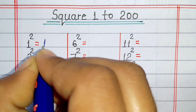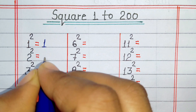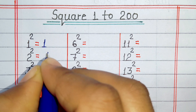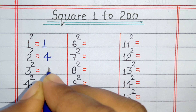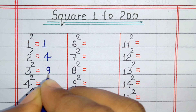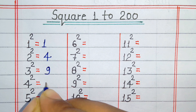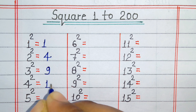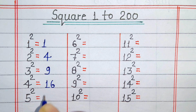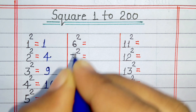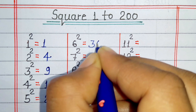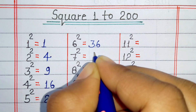Square of 1 is 1. Square of 2 is 4. Square of 3 is 9. Square of 4 is 16. Square of 5 is 25. Square of 6 is 36.